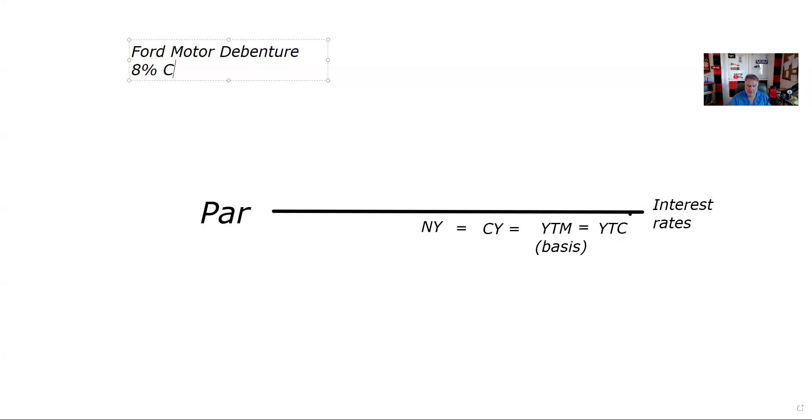Remember, there's three issuers that you're held accountable for on bonds on your Series 7. The three issuers are corporate issuers of bonds, municipal issuers of bonds, and the U.S. government is an issuer of bonds. So lots of bond questions.